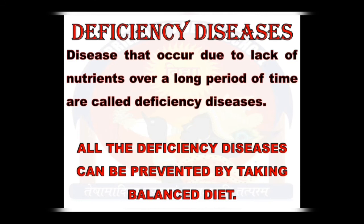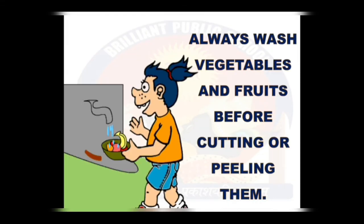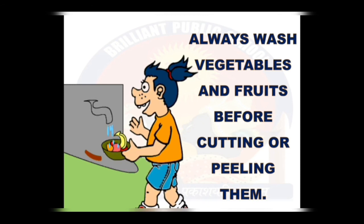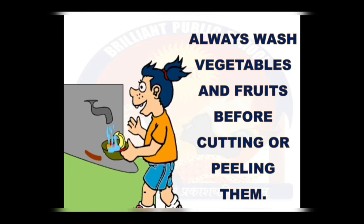In summary, deficiency diseases occur due to lack of nutrients over a long period of time and can be prevented by taking a balanced diet. We should always wash vegetables and fruits before cutting or peeling them, as washing after cutting may result in loss of vitamins and minerals found in the skin. Similarly, repeated washing of rice and pulses may remove vitamins and minerals present on them.